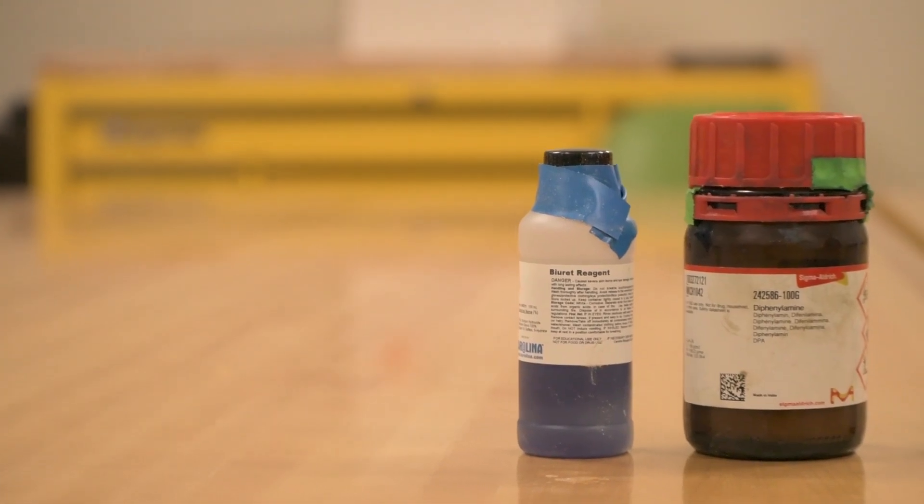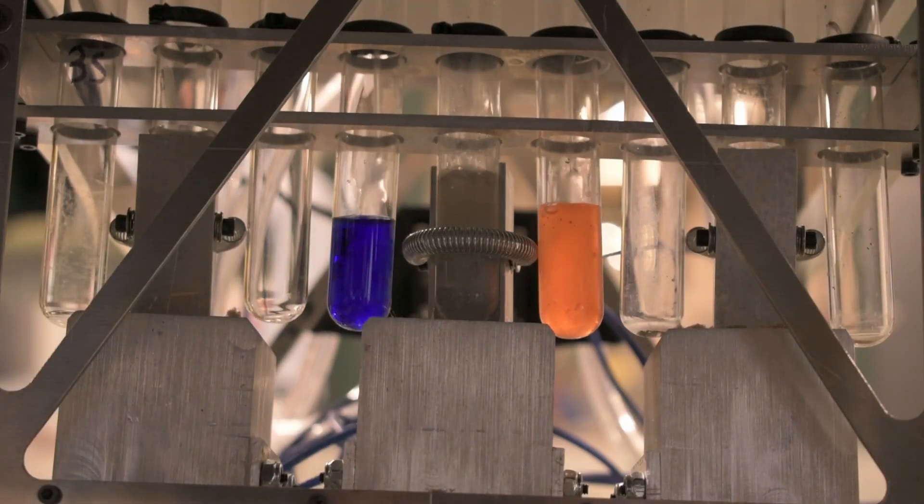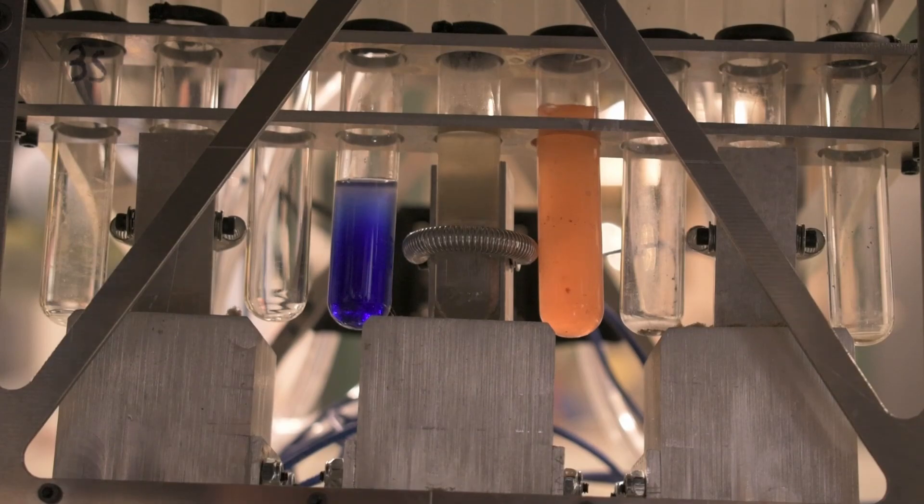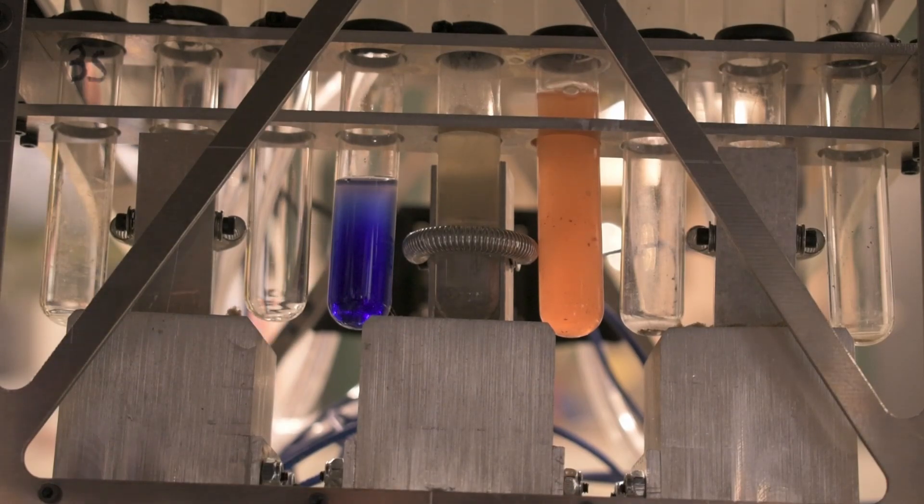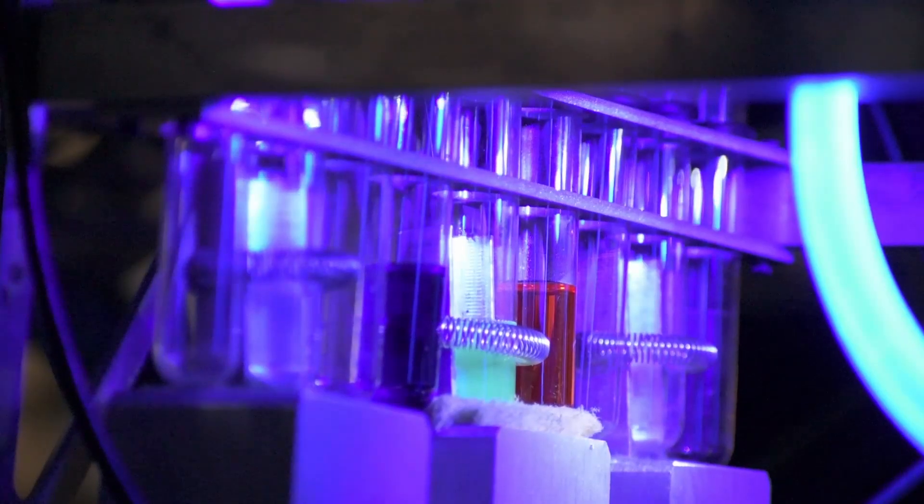Biuret, dished diphenylamine, and propidium iodine reagents sat in the test tubes will undergo reactions in the presence of proteins, DNA, and DNA from dead cells. The UV LED will allow us to view fluorescence when propidium iodide reacts.